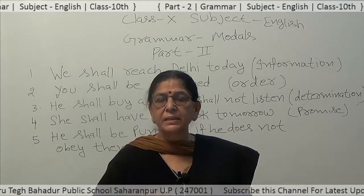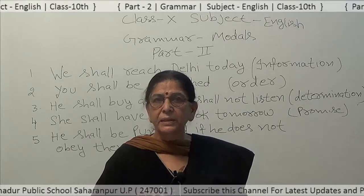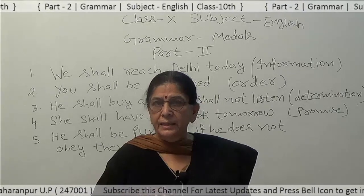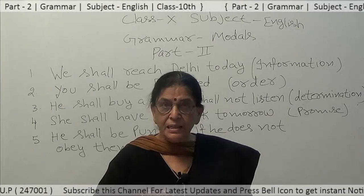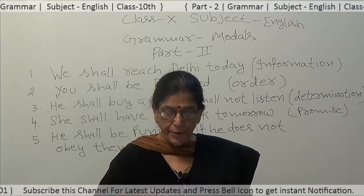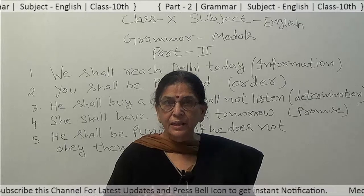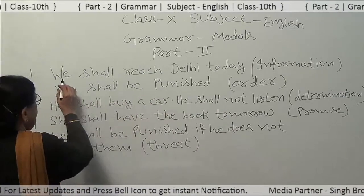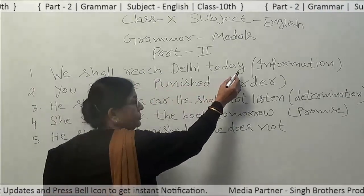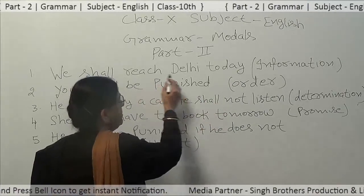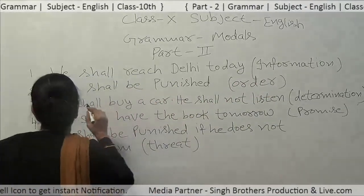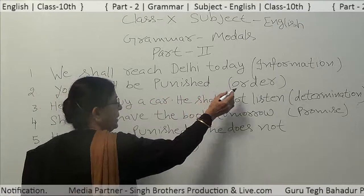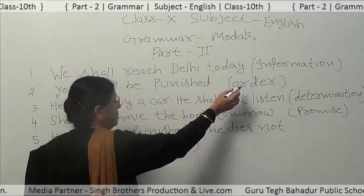And with the rest of the persons — second person, that is 'you', and third person: he, she, it, they — we use 'will'. That is when we have to express information for future tense. For example: 'We shall reach Delhi today.' Here simply information is given. Number two: 'You shall be punished.' Here it is expressing order.